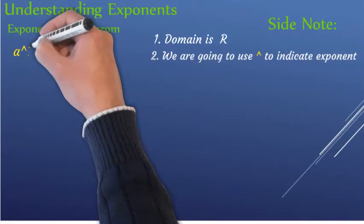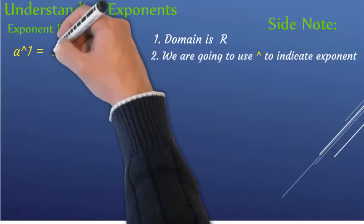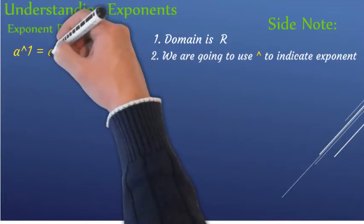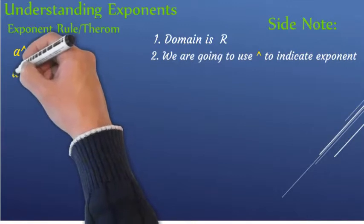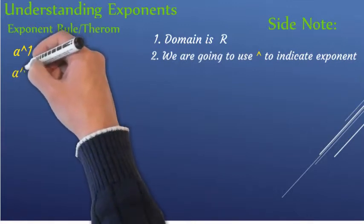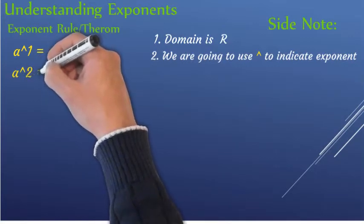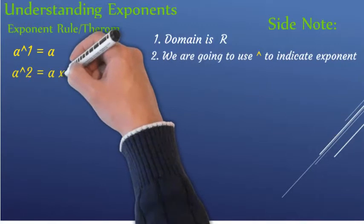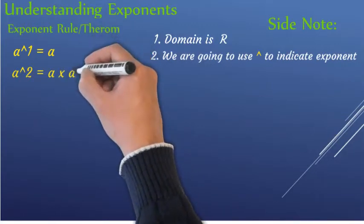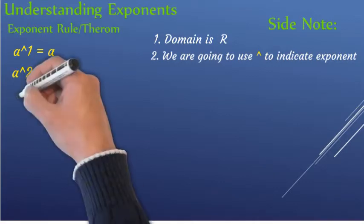A to the power of one is going to be A. A to the power of two, the power of one, is going to be A times A, which is A squared.